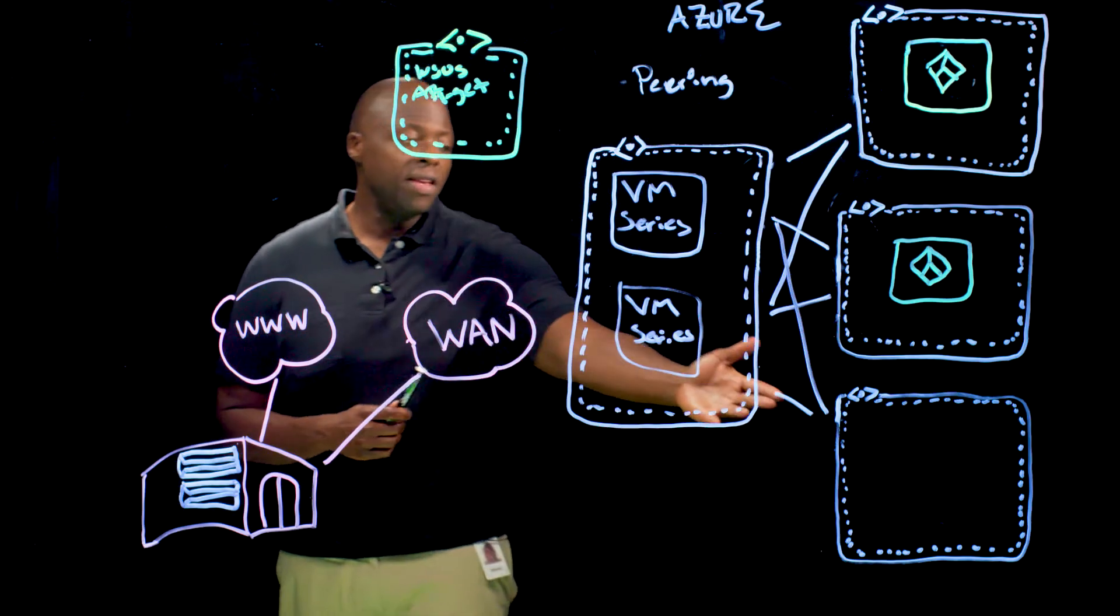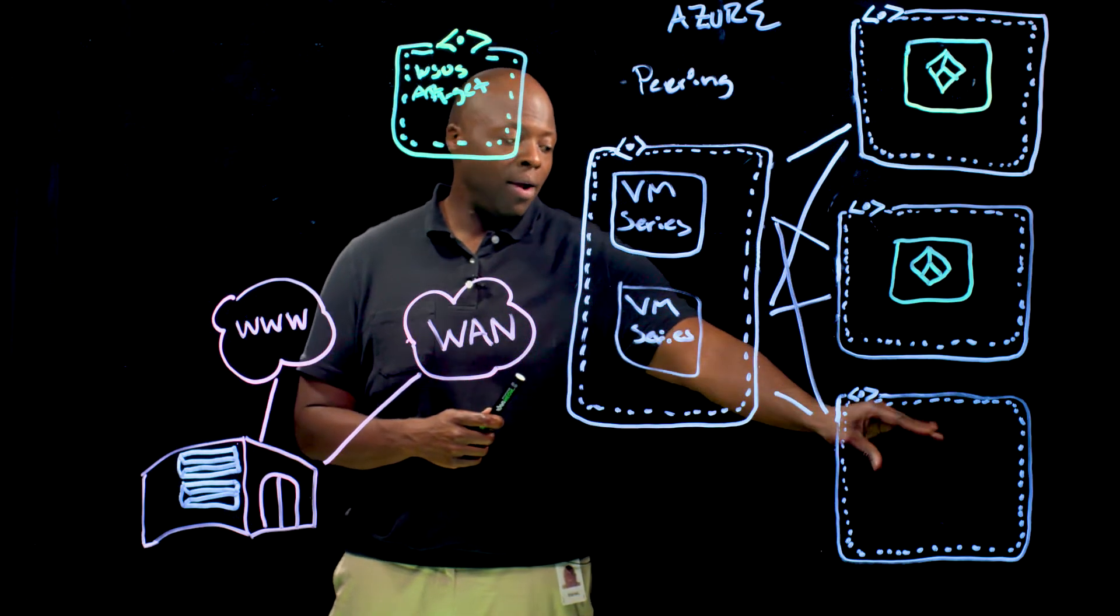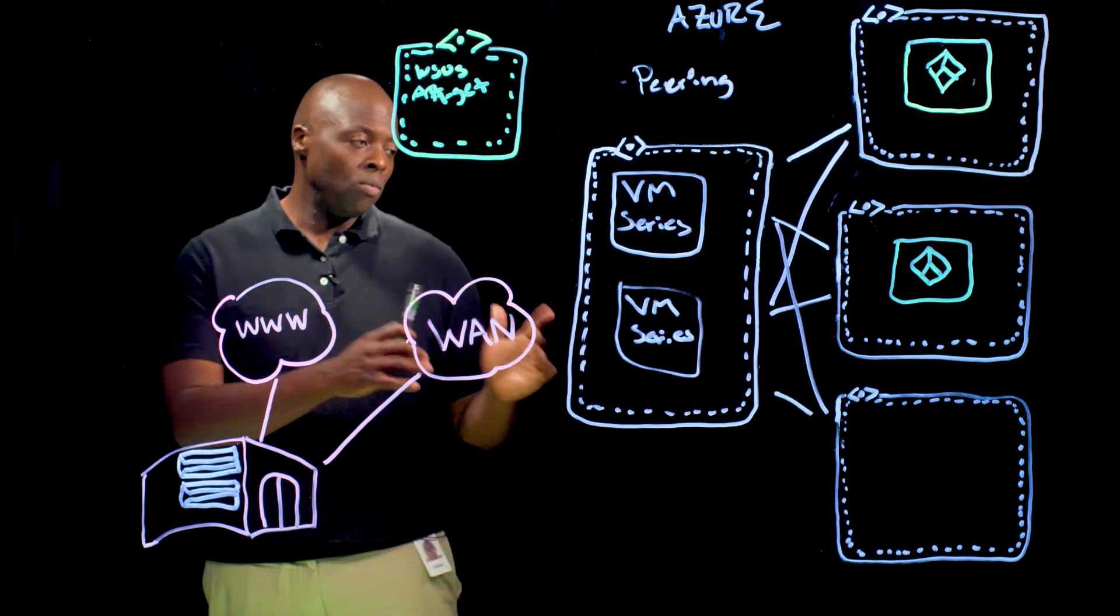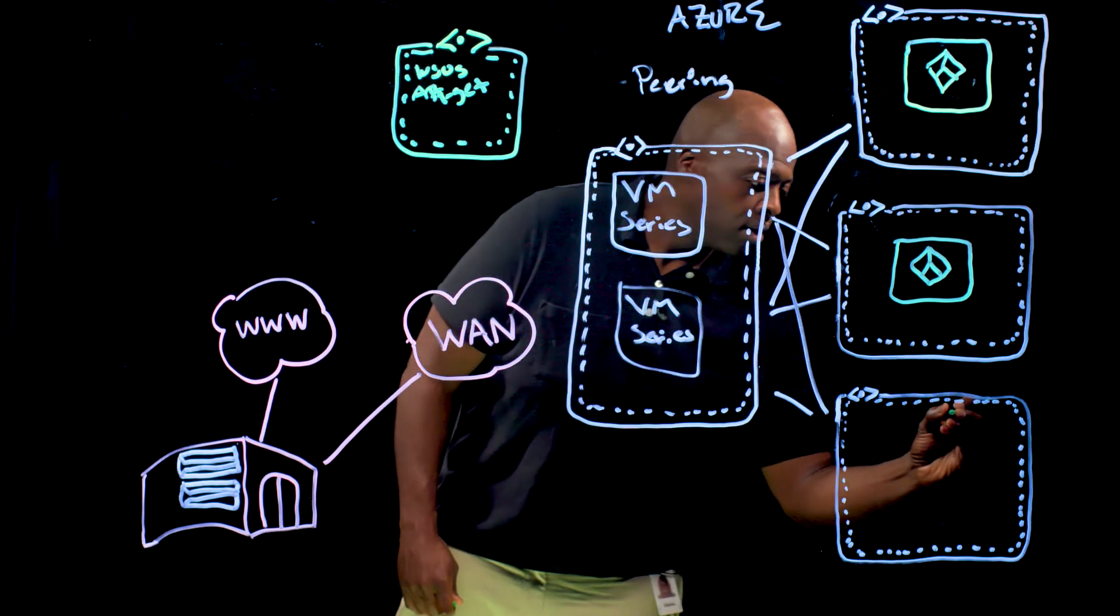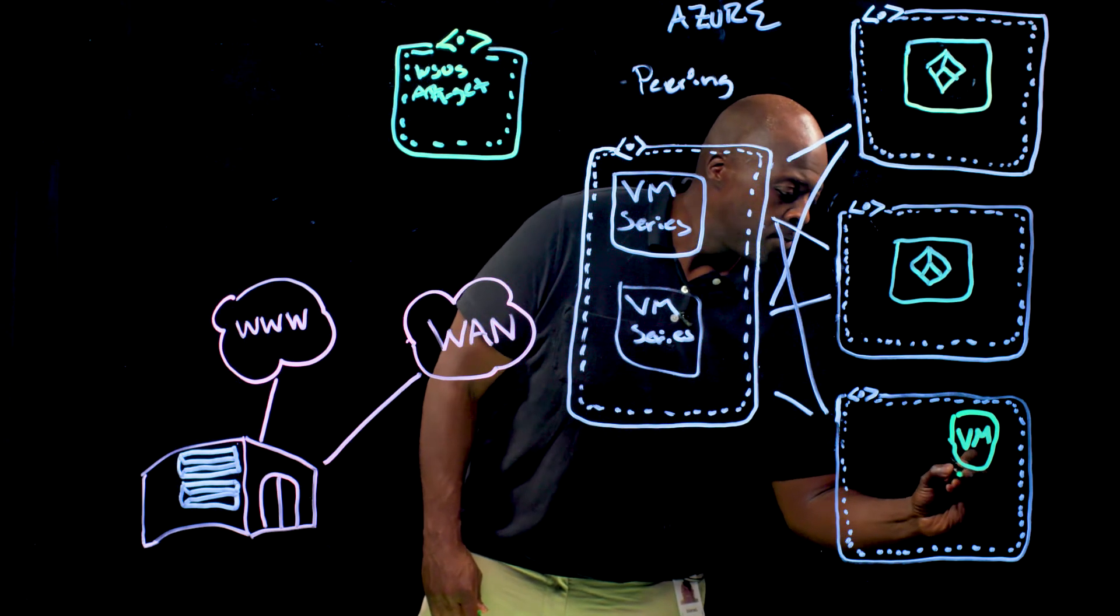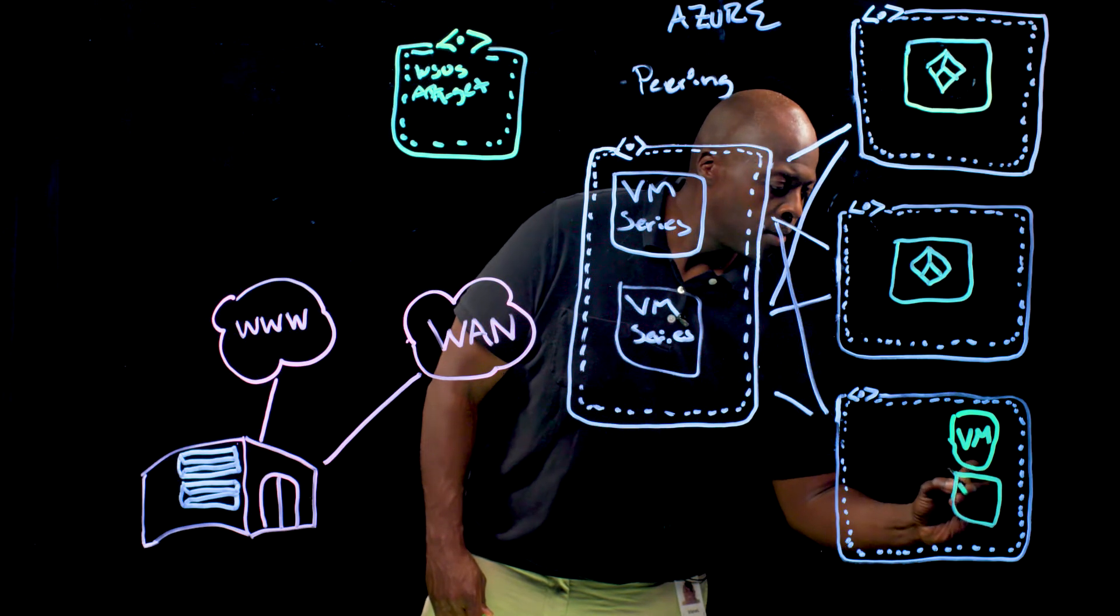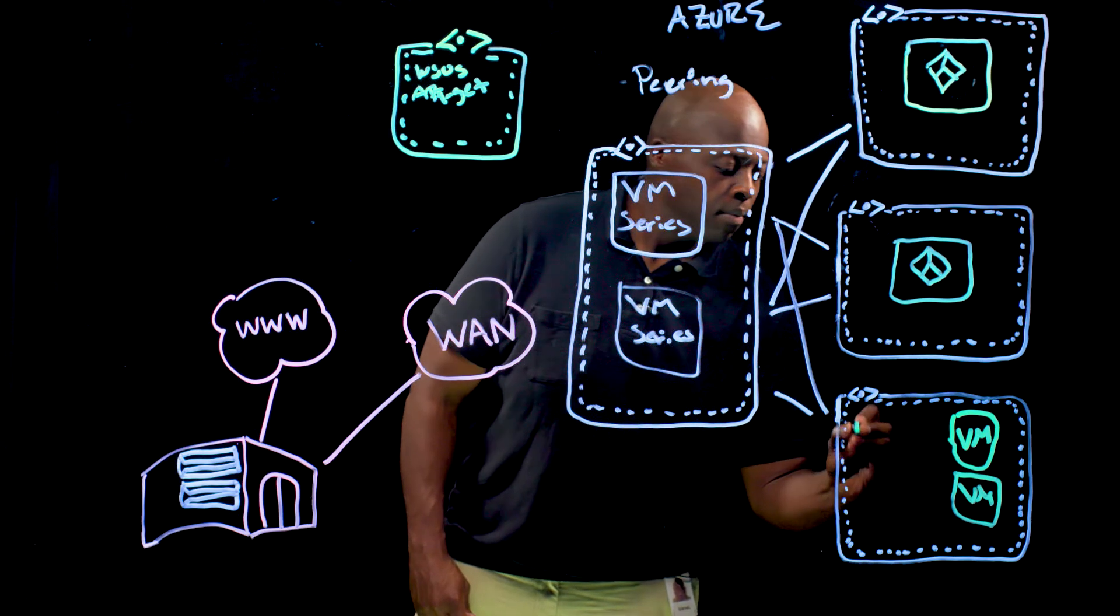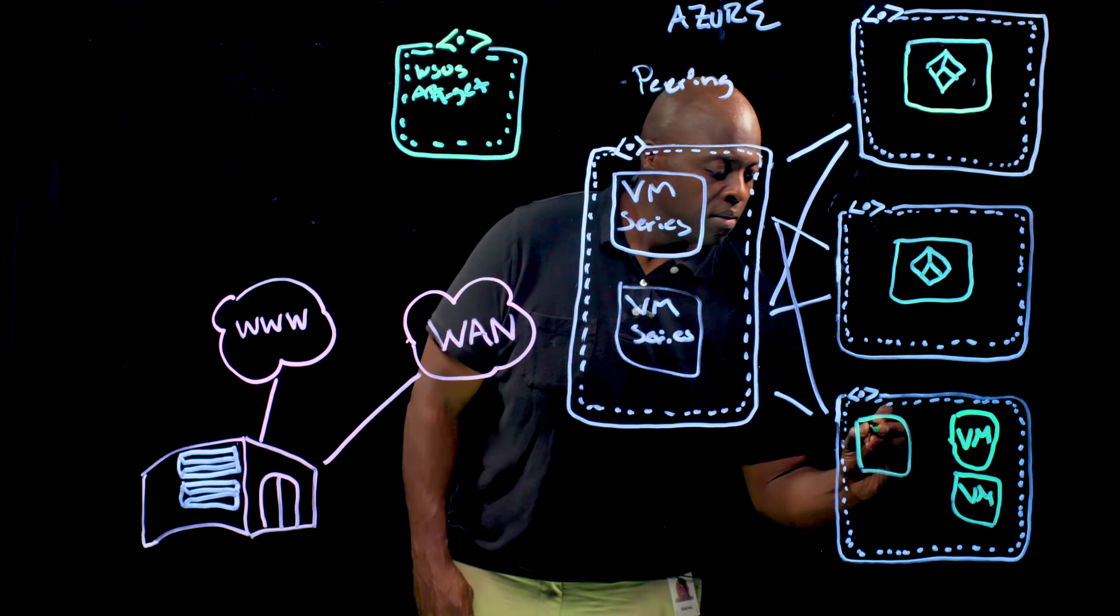Now we're going to discuss how we address inbound traffic to public facing workloads. As you can see here, we have a virtual network where everything's been erased so we can add two VM-series firewalls, and we still have our workloads behind there.